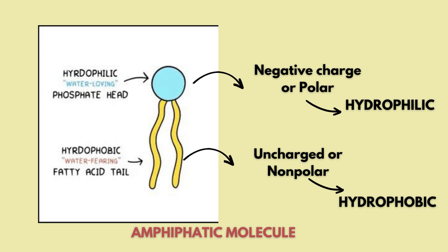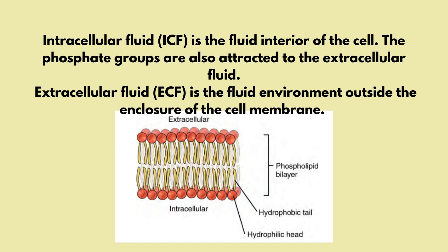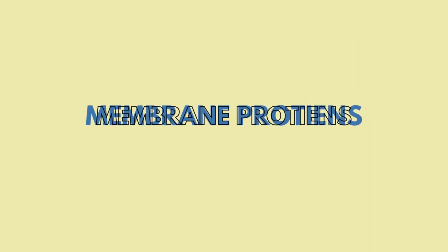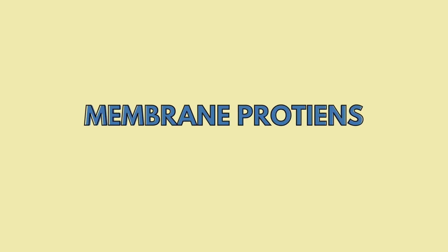For example, soap will dissolve grease stains or oils. In the lipid bilayer, we have two environments: one is extracellular and the other is intracellular. Phosphate groups will face the extracellular environment, while lipid tails face away from intracellular fluids. We also have proteins in the cell membrane, known as membrane proteins, which are generally scattered throughout.